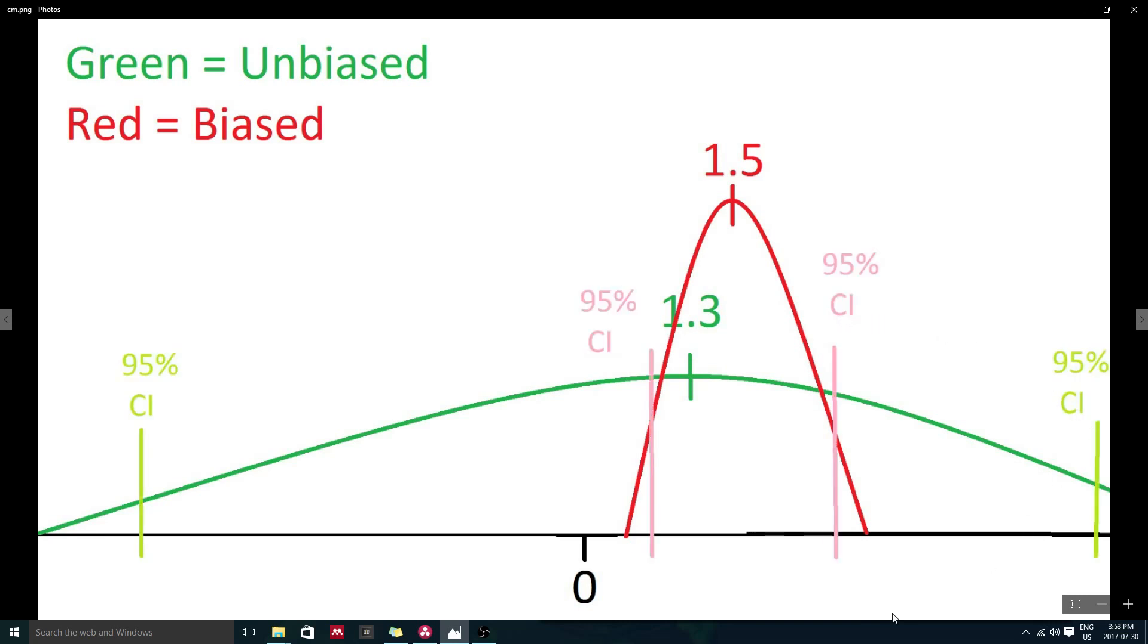If we decide to build 95% confidence intervals around each of these estimates, the unbiased estimator has an incredibly wide confidence interval, whereas the biased estimator has an incredibly tight confidence interval. So, probabilistically, we are much more likely to be closer to the true unbiased parameter if we use the biased estimate.